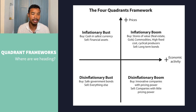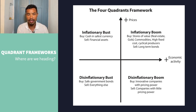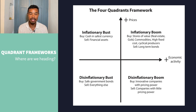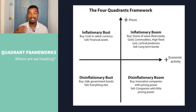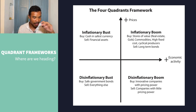This Four Quadrants framework for portfolio construction by Charles Gave highlights four different quadrants: inflationary boom, inflationary bust, disinflationary boom, and disinflationary bust. On the y-axis we have prices moving higher — the inflationary pressures we're all familiar with — and on the x-axis, economic activity. GDP is one of the easiest determinants, but there's a range of economic data we can use as proxies, including manufacturing data, retail sales, and consumer confidence.